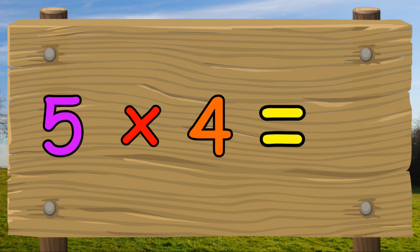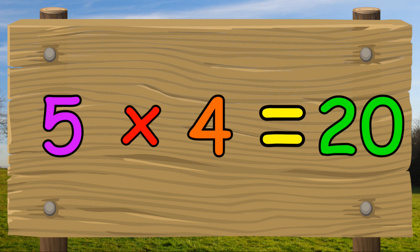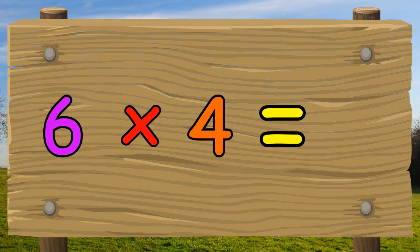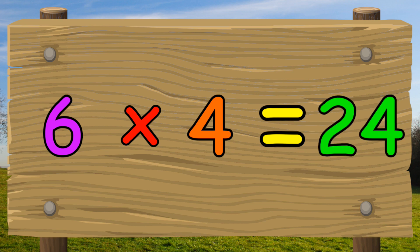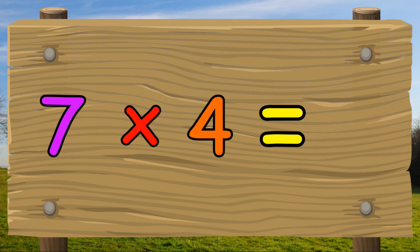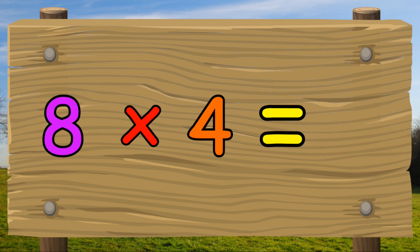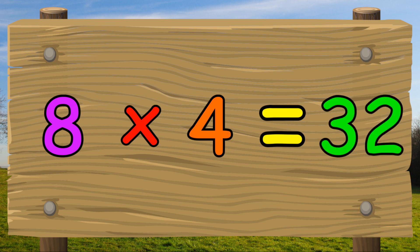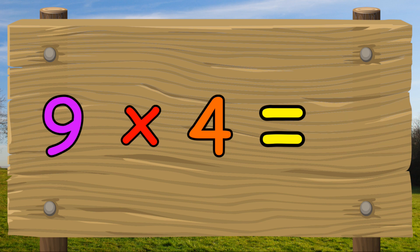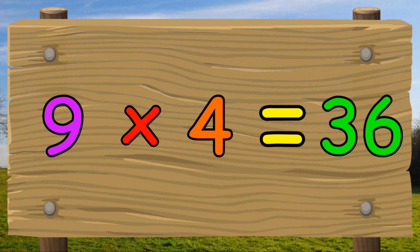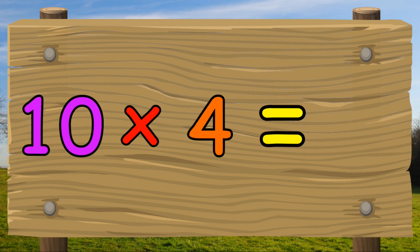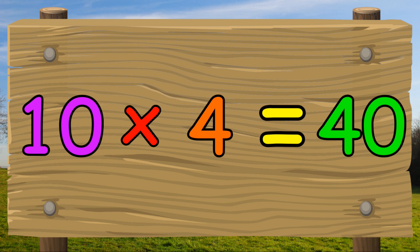Five times four equals twenty. Six times four equals twenty-four. Seven times four equals twenty-eight. Eight times four equals thirty-two. Nine times four equals thirty-six. Ten times four equals forty.